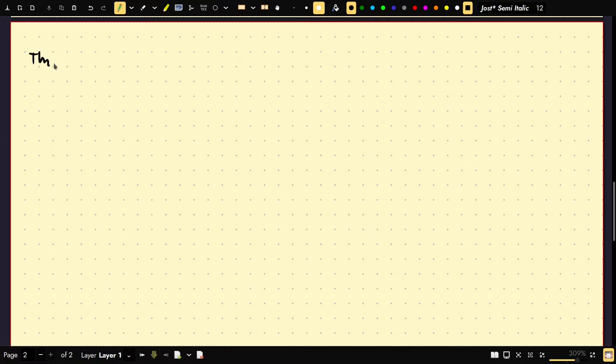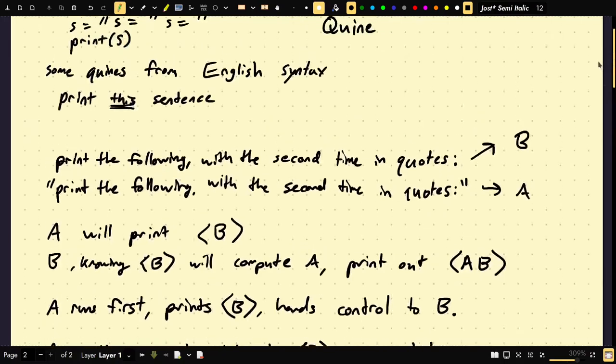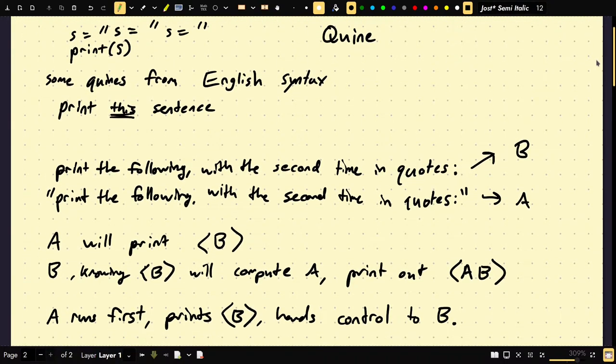Now onto the big theorem, which is called the recursion theorem. In human words, any TM can obtain a copy of its own description and compute with it. So the Turing machine has a self-reference. The 'this' part of the sentence, right, in our first example, I said, print this sentence. That doesn't make sense. But with the recursion theorem, it does.